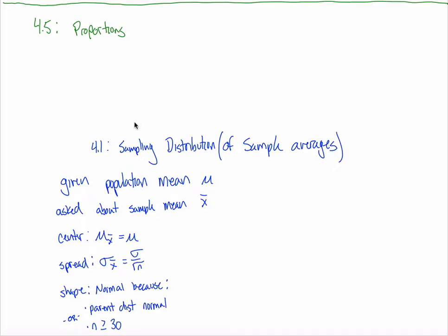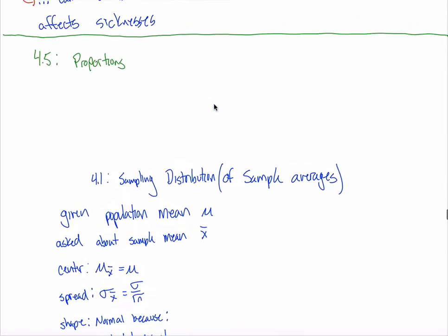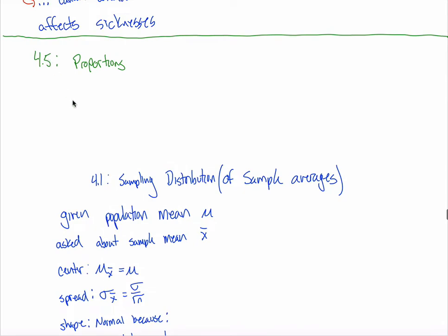Section 4.5 — we start talking about proportions. 4.5 is going to be a long section. We're going to break it up into three different homework assignments, and they'll loosely correspond with 4.1, 4.2, and 4.3. We'll redo the ideas from those three sections: the inverse norm and normal CDF stuff from the sampling distribution, the confidence interval stuff, and the hypothesis testing stuff.